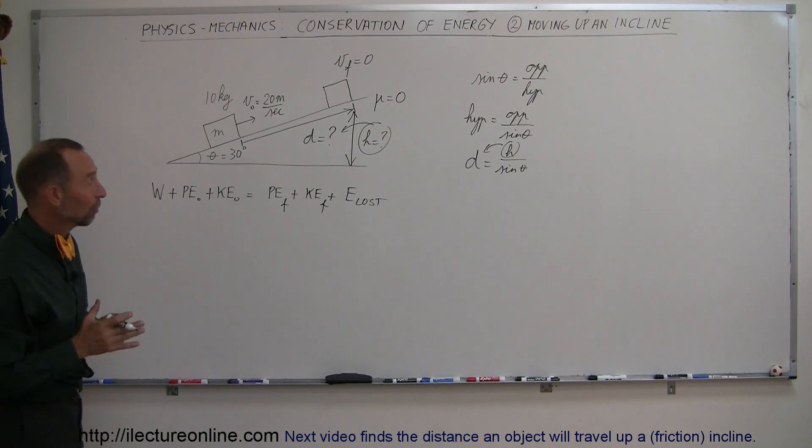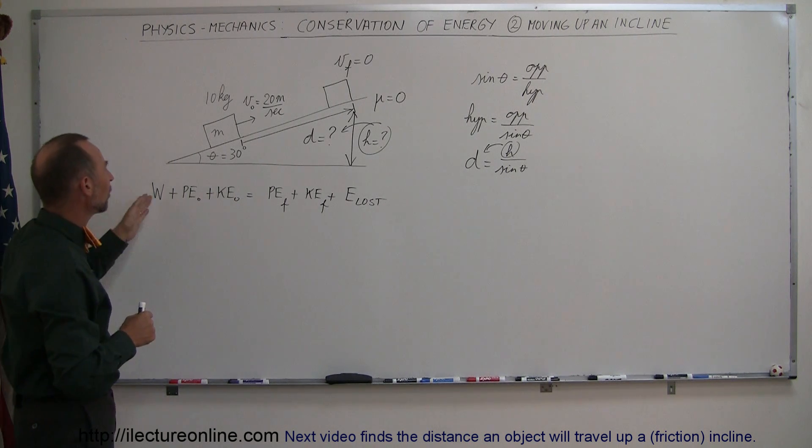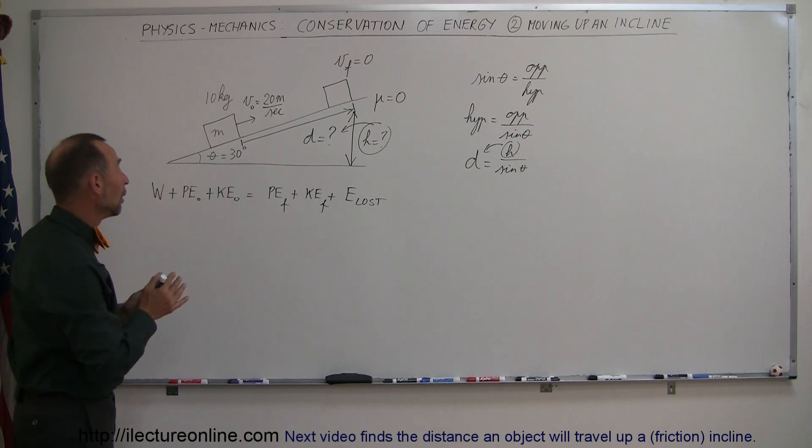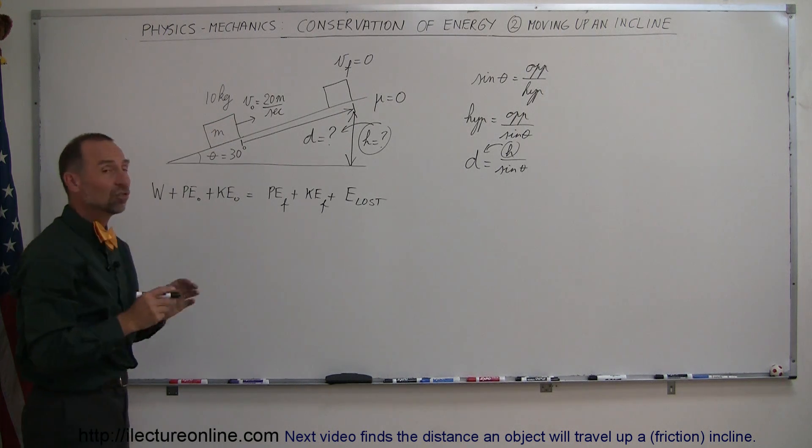Now the next step is to figure out which ones of these we don't have. We don't have any work input. Now we cannot do because we have to do something to get the object moving at 20 meters per second, but that's not part of the problem. We already take that into account by saying it has kinetic energy.